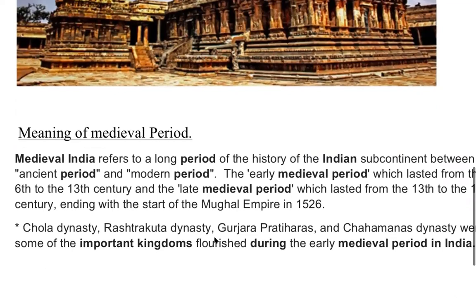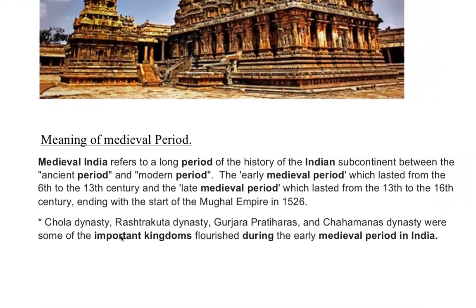So let's talk about the meaning of the medieval period. Medieval India refers to a long period of the history of the Indian subcontinent between the ancient period and the modern period. The early medieval period lasted from the 6th to the 13th century, and the late medieval was from the 13th to the 16th century, ending with the start of the Mughal Empire in 1526.